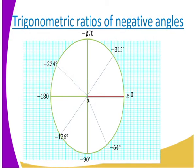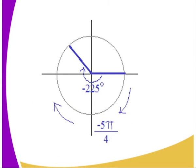You can see that negative 64 degrees is in the fourth quadrant. Negative 126 degrees, which is greater than negative 90 and less than negative 180, is in the third quadrant. The next one is in the second quadrant. Then negative 315 degrees, which is greater than negative 270, is in the first quadrant. You can see that negative 225 degrees is in the position of the second quadrant, where the angle is greater than negative 180 degrees and less than negative 270 degrees.